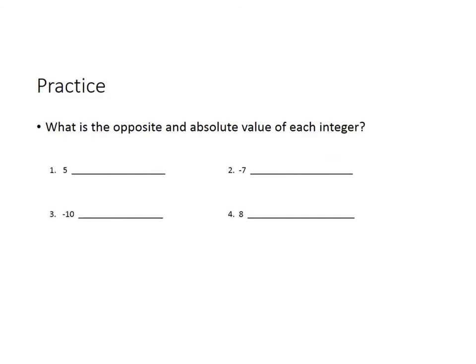What we need to do is write the opposite and the absolute value of each integer. Number one is five — the opposite of five is negative five, and the absolute value of five is five. Number two is negative seven — the opposite is seven, and the absolute value of negative seven is seven. Number three is negative ten — the opposite is ten, and the absolute value of negative ten is ten. Remember, the absolute value is the distance from zero, and that is always going to be positive. Number four is eight — the opposite of eight is negative eight.